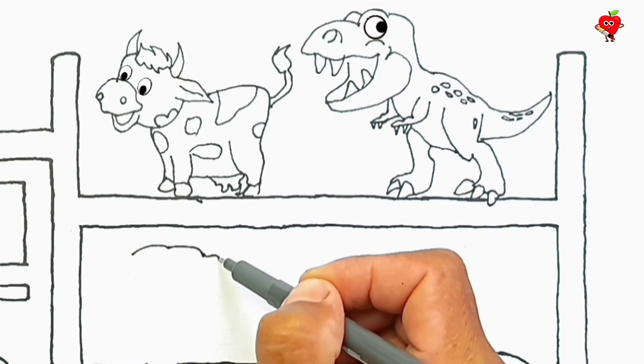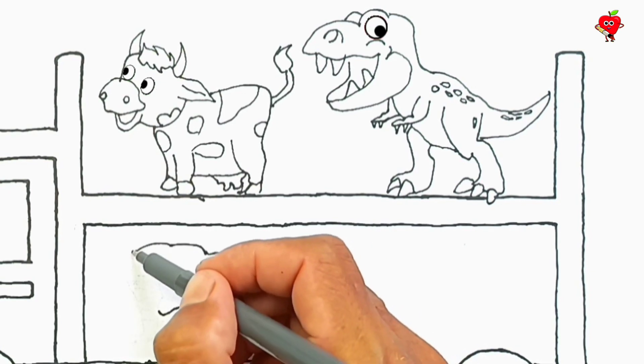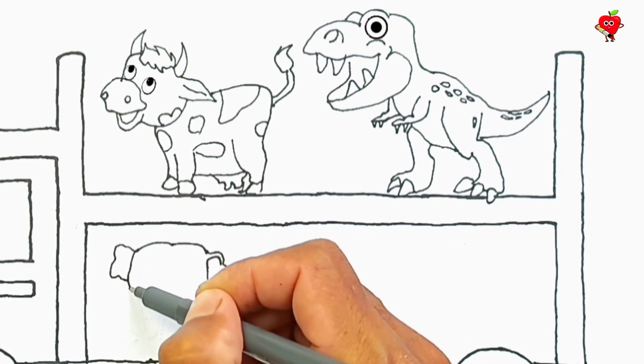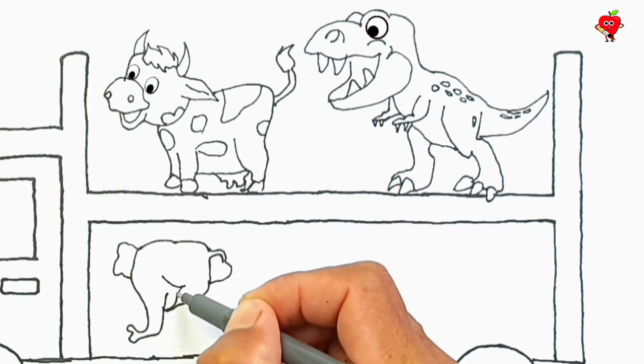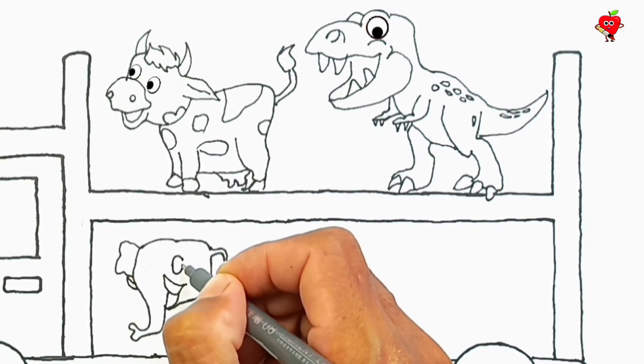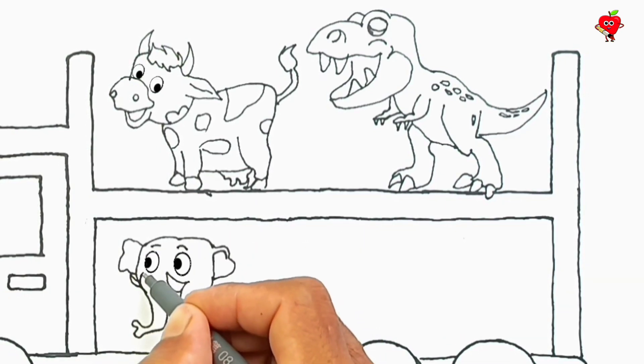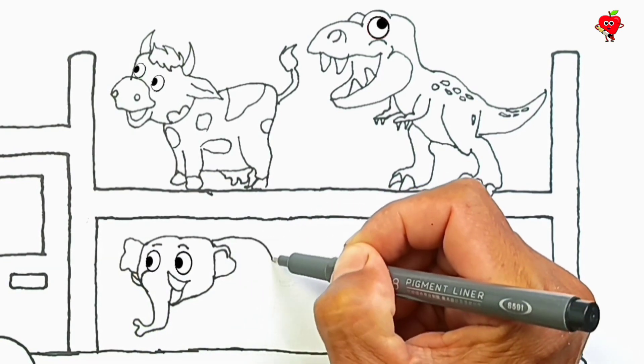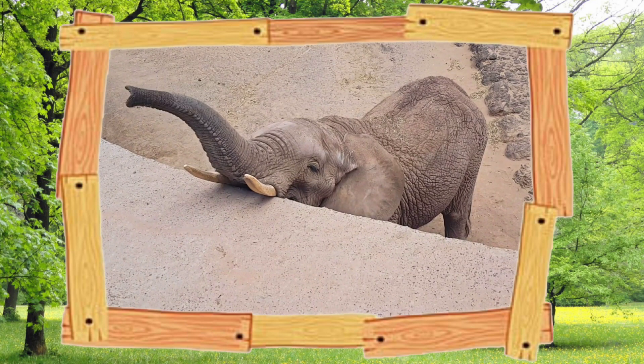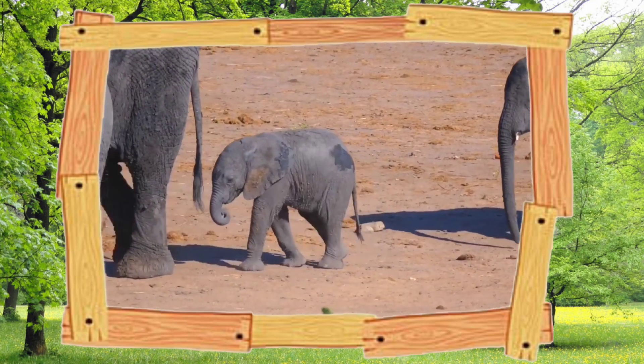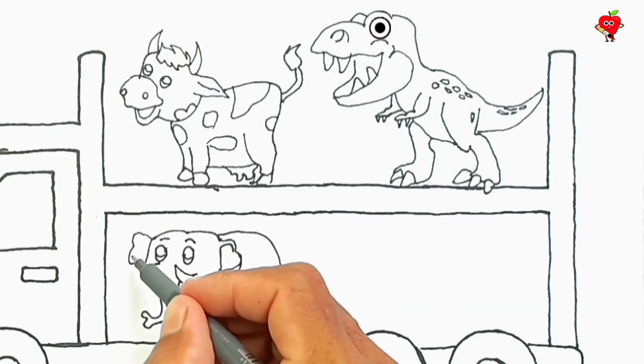And we will draw animals next. This is an African elephant calf. Let's finish drawing it. Wow, look, her eyes are open. Yes, he is a very cute baby elephant. Okay, let's finish everything.